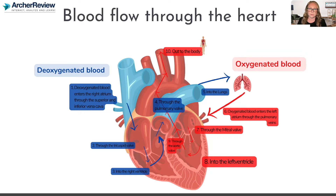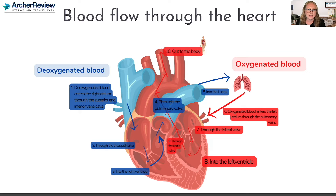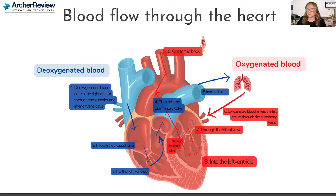Now we've got red oxygenated blood — we're on the red subway line. We go from the lungs back to the heart, with the blood returning through the pulmonary veins into the left atrium. Now it has to go through that valve separating the left atria and left ventricle. Remember there are two names for this one: the mitral or bicuspid valve. It goes through that valve into the left ventricle.